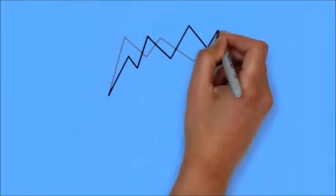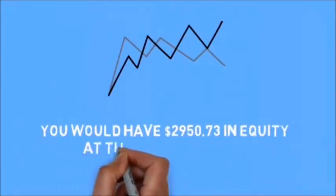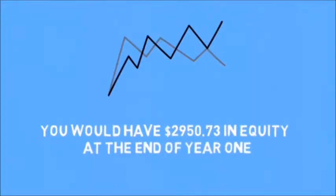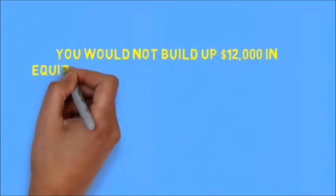If we disregard market price fluctuations and simply look at the charts for a standard 5% 30-year fixed rate mortgage on a $200,000 home, you would have $2,950.73 in equity at the end of year one. You would not build up $12,000 in equity until the end of the 46th month.